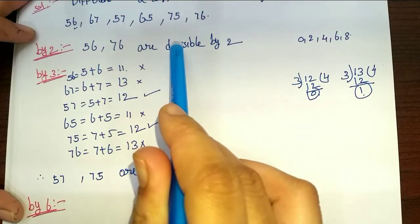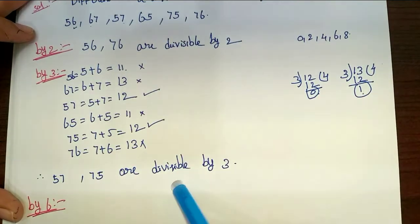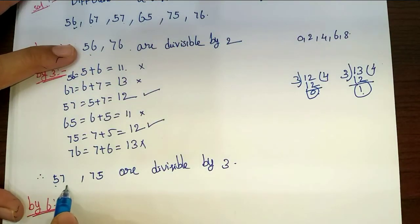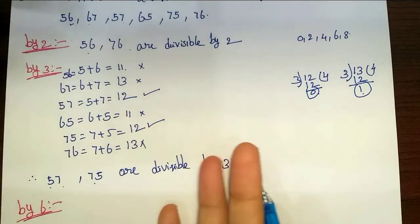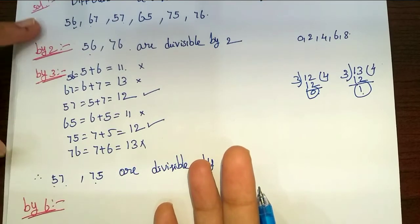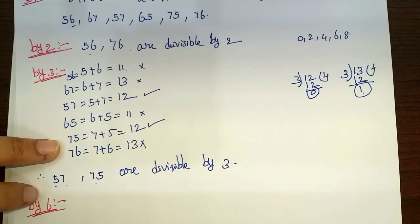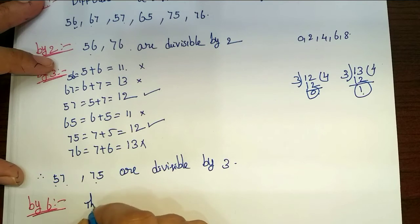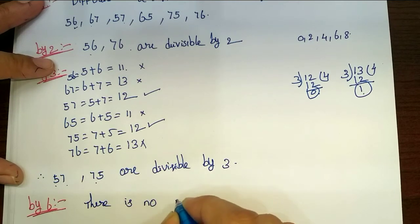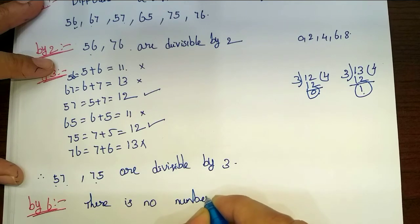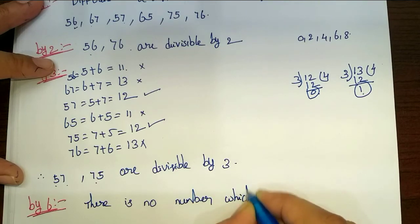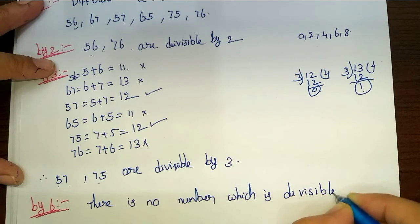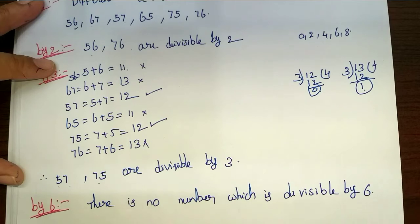Next, divisibility rule by 6: a number is divisible by 6 if it is divisible by both 2 and 3. Checking 56 and 76 for divisibility by 2, and 57 and 75 for divisibility by 3 — no single number satisfies both conditions, so no number is divisible by 6.